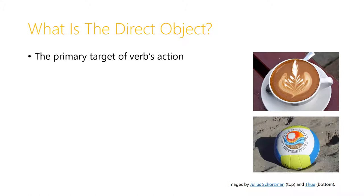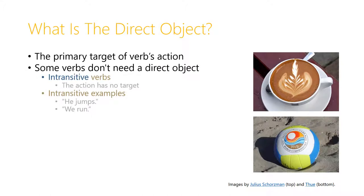What is the direct object? It's the primary target of the verb's action. Some verbs don't need a direct object, and we call these intransitive verbs, because the action has no target. Some intransitive examples in English would include the sentence 'he jumps' — the jumping here doesn't target anything, it's just a person jumping. Or 'we run' — the running doesn't have any particular target, it's just an activity that we participate in.